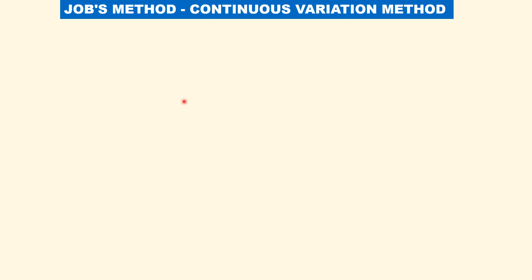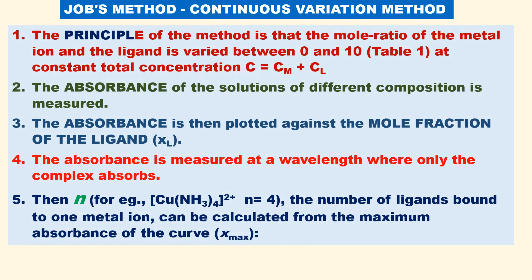Let us now discuss the principle and procedure of the continuous variation method. The principle is that the mole ratio of the metal ion and ligand is varied between 0 and 10 millimolar (or any concentration you choose). We will see in a table how a series of solutions are prepared at constant total concentration. C equals total concentration; Cm is the concentration of the metal ion; Cl is the concentration of the ligand. The absorbance of various solutions is then plotted against the mole fraction of the ligand, Xl.